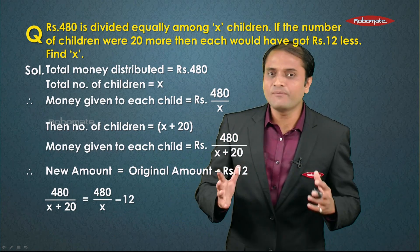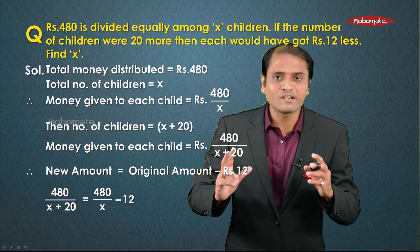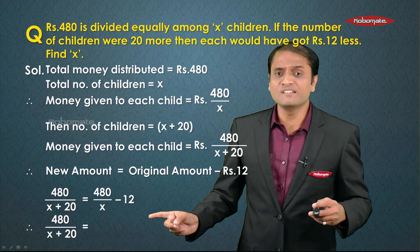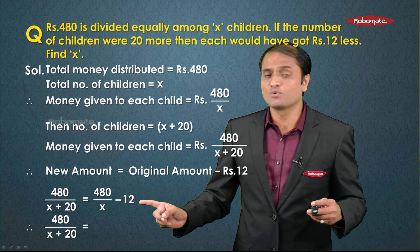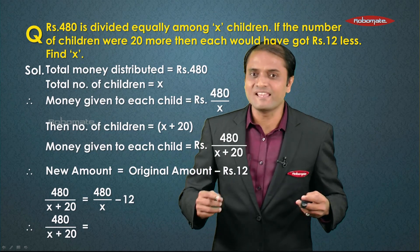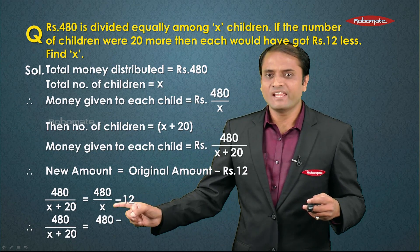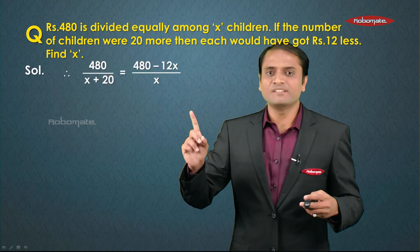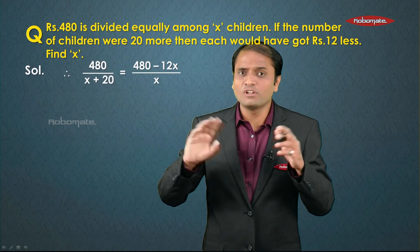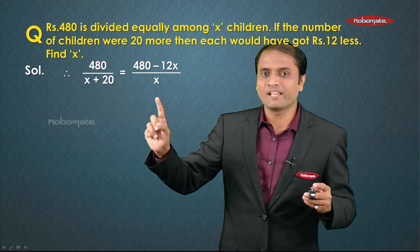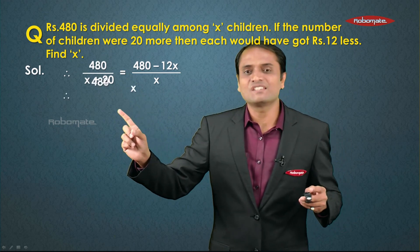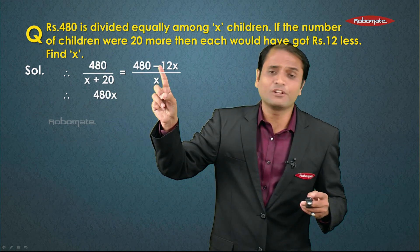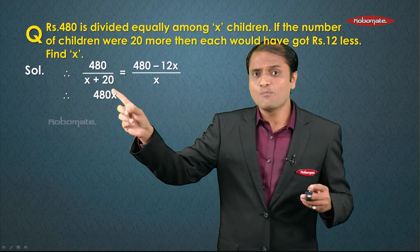Now we simplify this equation into standard quadratic form. On the LHS we have 480 upon (x plus 20). On the RHS we perform LCM, giving us (480 minus 12x) upon x. We then do cross multiplication: LHS becomes 480x, and the denominator (x plus 20) multiplies the numerator (480 minus 12x) on the RHS.